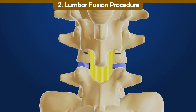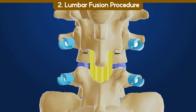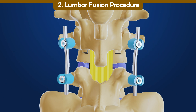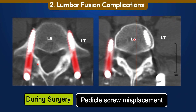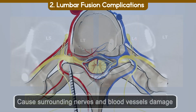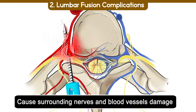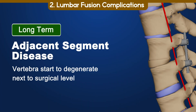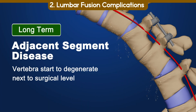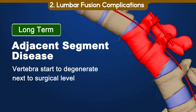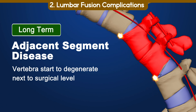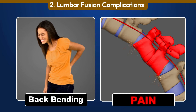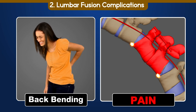2. Lumbar fusion: This surgery connects two spinal bones using screws and rods. Pedicle screw misplacement can easily occur during this surgery, and misplaced screws can cause damage to surrounding nerves and blood vessels. Additionally, over the long term, lumbar fusion may lead to adjacent segment disease, where spinal segments near the fused area degenerate more quickly due to increased stress. This can potentially impact daily activities, such as bending.